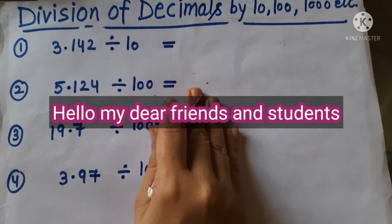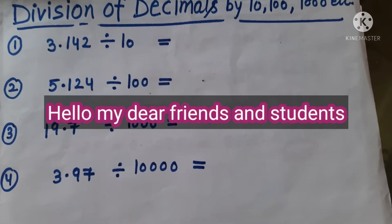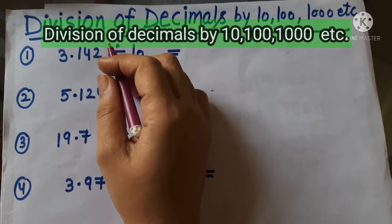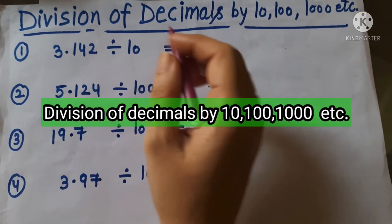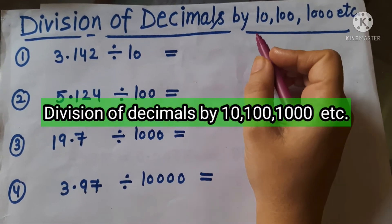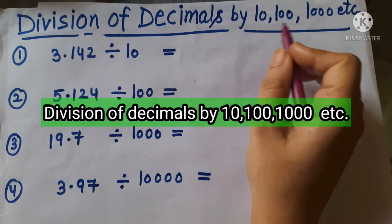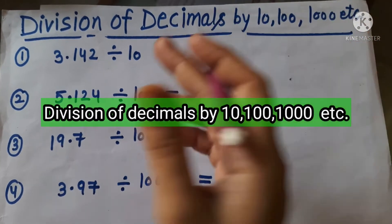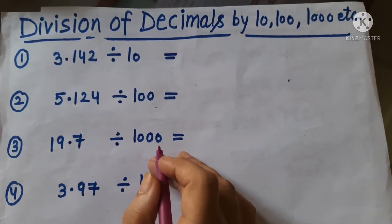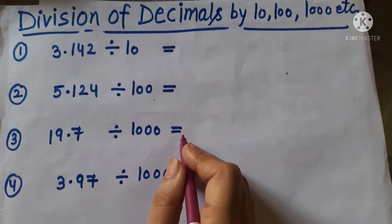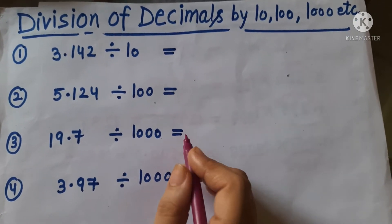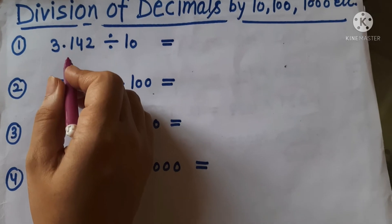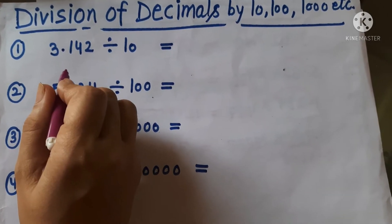Hello my dear friends and my dear students. Today's topic: we will divide decimal numbers by 10, 100, 1000, 10,000, etc. — numbers with lots of zeros — and we will divide those numbers with decimal numbers.